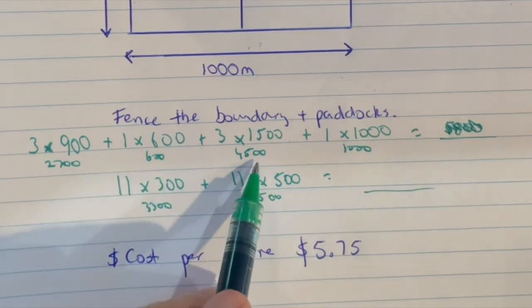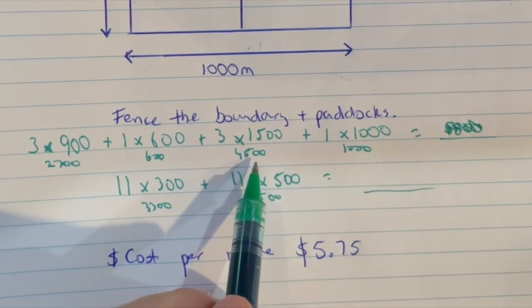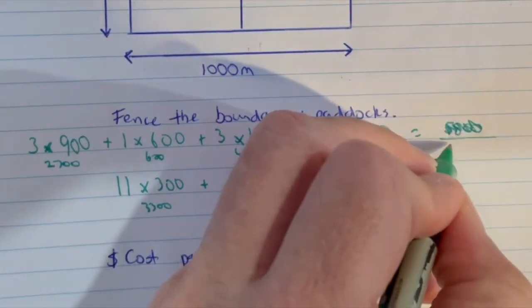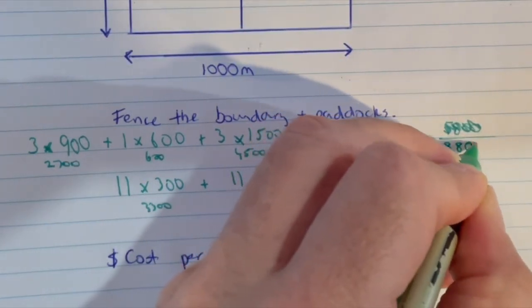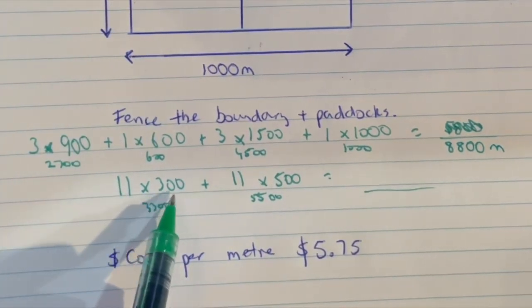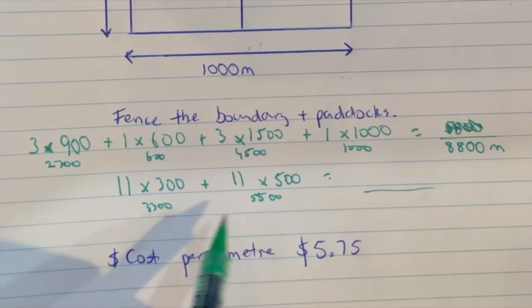3,300 plus 4,500 will give you 7,800, plus a thousand is 8,800 meters. And this one here, 11 by 300 gives you 3,300 and 11 by 500 gives you 5,500. That'll also give you 8,800 meters.